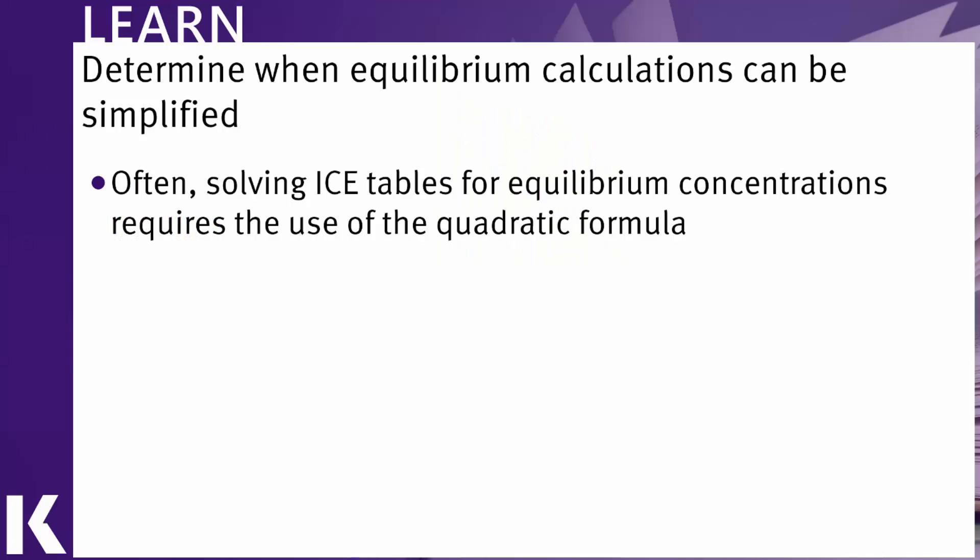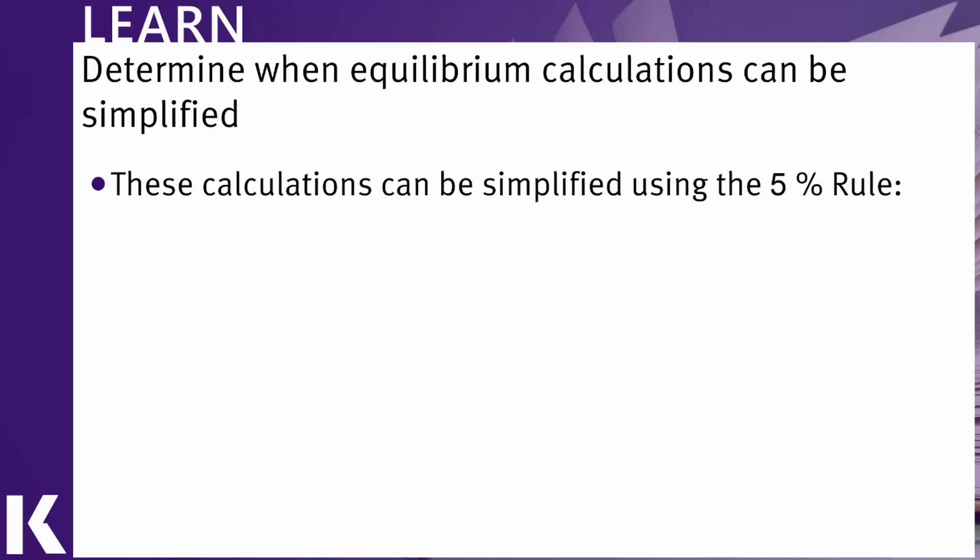The thing that makes solving ICE tables for equilibrium concentrations so complicated is that it very often requires the use of the quadratic formula, and this makes the math very complicated. However, there is something called the 5% rule that can help you decide when or if you actually have to use this complicated quadratic process. And here are the parts of the 5% rule to keep in mind.